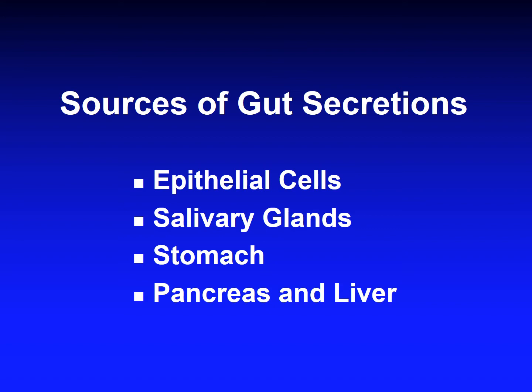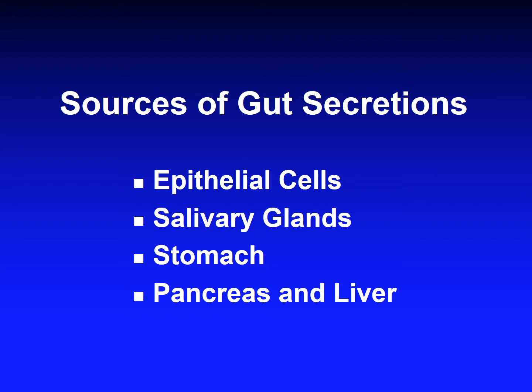We have four sources of gut secretions: secretions coming from epithelial cells, secretions from the salivary glands, secretions from the stomach, and secretions from the pancreas and liver. We will start with the first one. Epithelial secretions are three: water and electrolytes, mucus, and special molecules. We will talk about each one and how they are important in GI physiology.